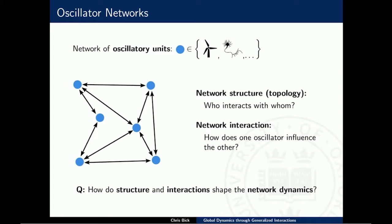What I'm interested in are network dynamical systems — networks of dynamical systems where each node in the network is a system, for example an ordinary differential equation. This could be a model for a motor and power grid, or a neuron or some other oscillatory system. There are two important factors: the network structure, which is the topology — who interacts with whom — and the network interaction, which specifies how one oscillator interacts with another. The main question driving my research is how the network structure and interactions shape the overall network dynamics.